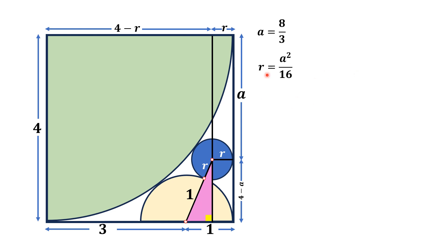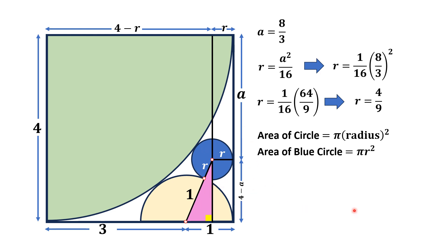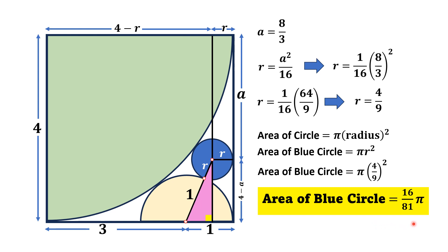So r = A²/16. Substituting A = 8/3, we get r = (1/16) × (8/3)² = (1/16) × (64/9) = 4/9. The area of the blue circle is πr² = π × (4/9)² = 16π/81 square units. That is the answer.